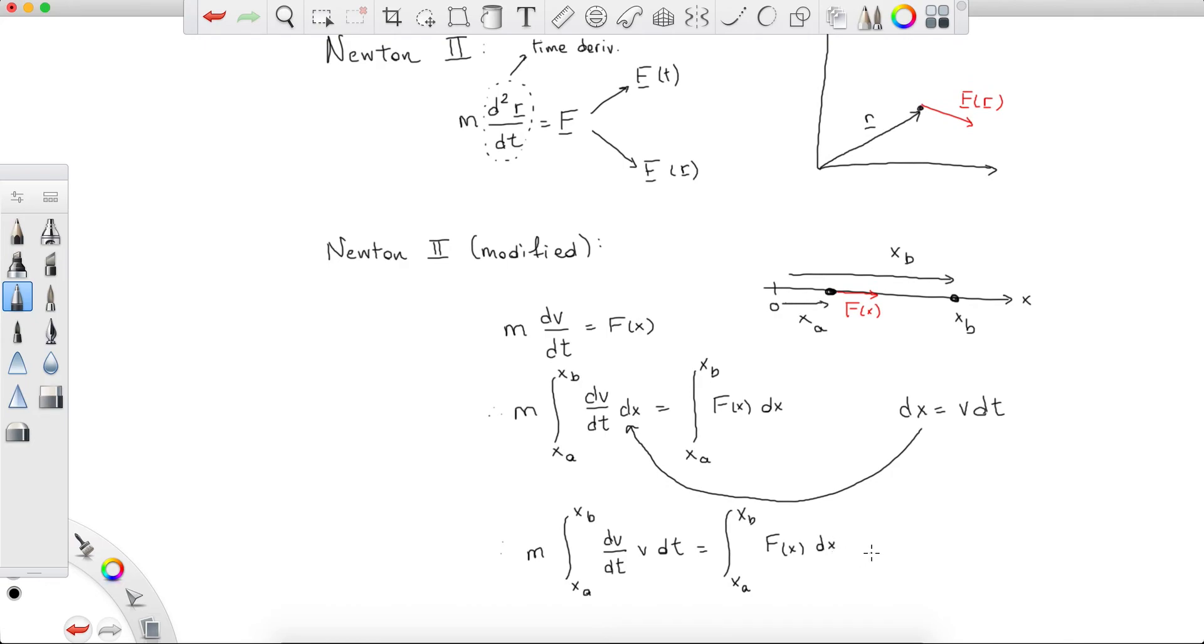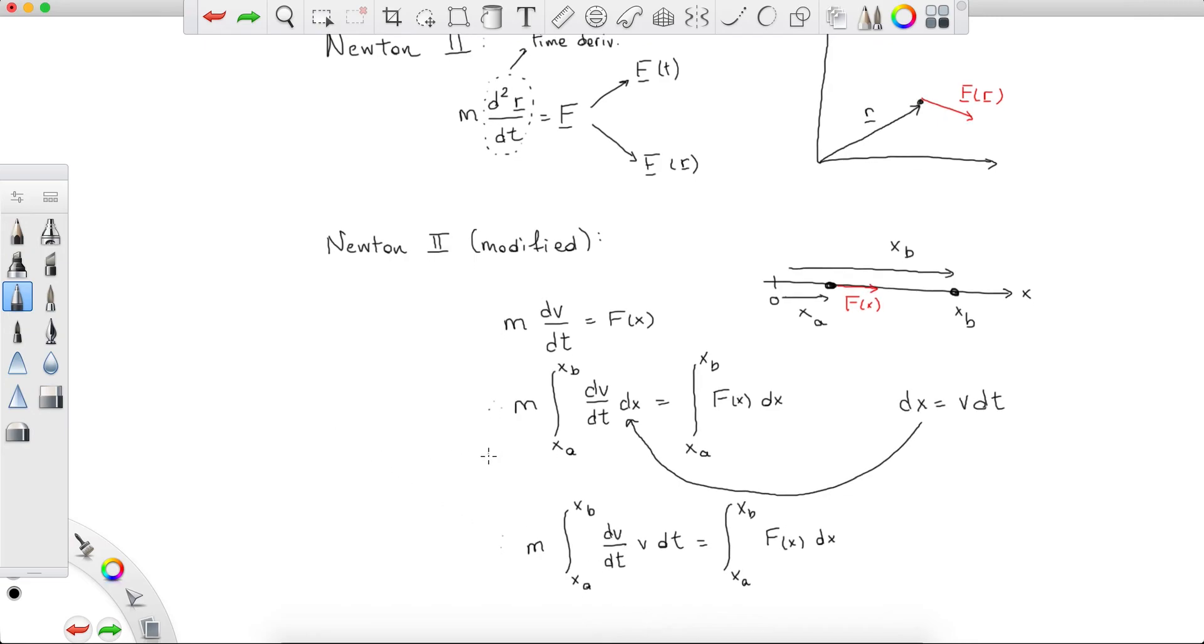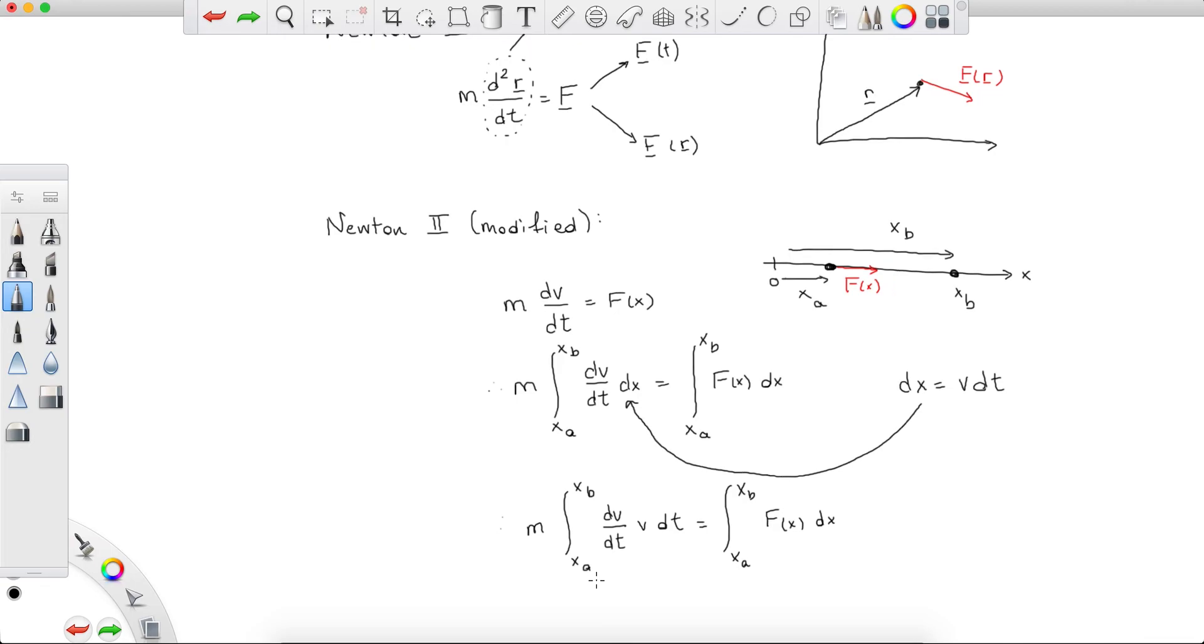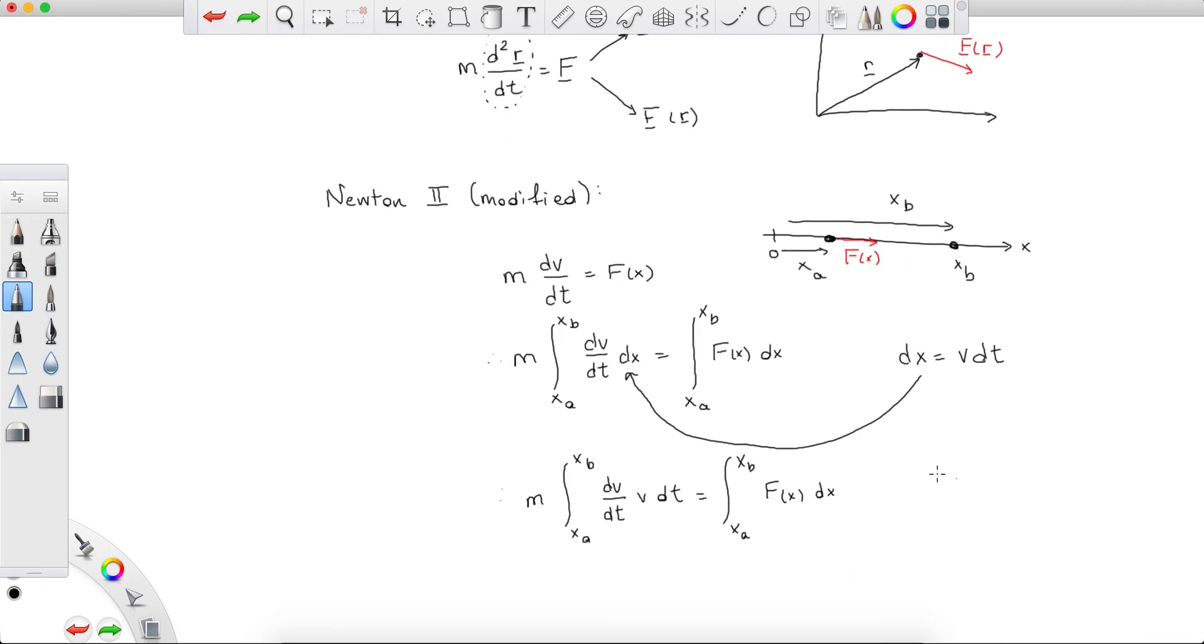Going on, now we use the chain rule. Now a typical physicist might actually do this horrible thing in the eyes of a mathematician and that would be just canceling off these two. I will not do that because we prefer rigor in our lectures. So what do we do? We note that the derivative with respect to time of one half v squared is none other than v dv/dt.